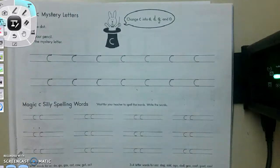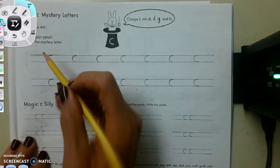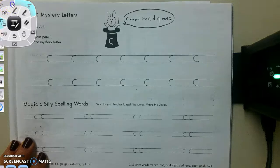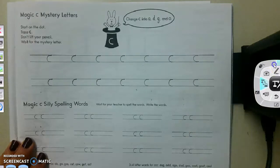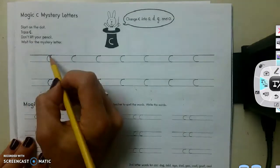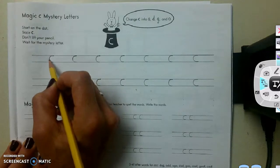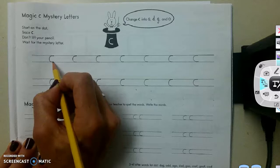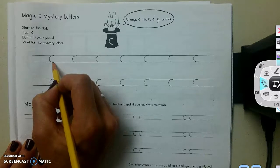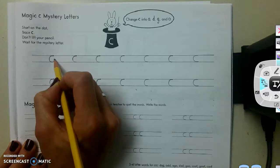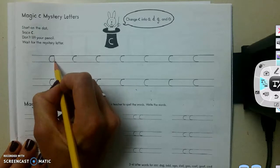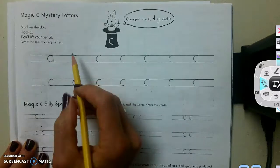So this is how it works. You start on the dot. Okay, put your pencil right there on that dot and trace the C. So you're going to go Magic C. And then you're waiting for me. I'm going to call out a letter. Don't lift your pencil. And I might say A, so then you go up like a helicopter. Down. Okay, so everybody get your pencil ready.